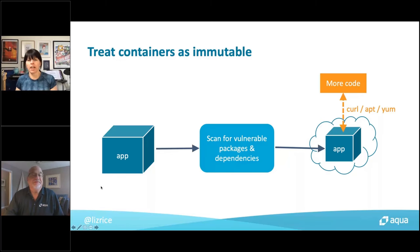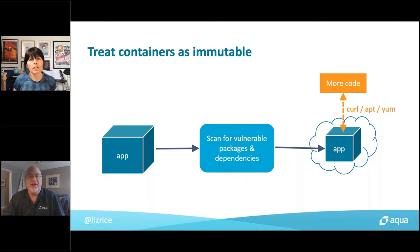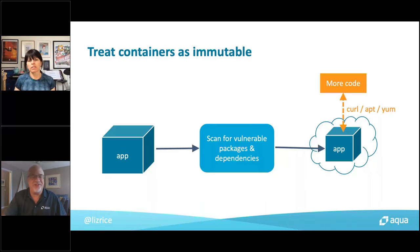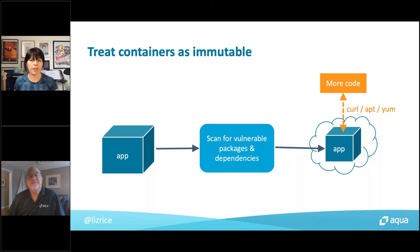If you add additional code to your image at runtime — using package managers like apt or yum, or curl, FTP, or git clone — that additional code hasn't been scanned, and you have no way of knowing it's safe to run. Best practice is to only run code in your containers that was present when you built the image. We call this treating containers as immutable. A change to a running container is sometimes called drift, and we'll come back to that idea later. For 99.9% of normal applications, there's no reason to update a running container — it's much better to rebuild your container image and redeploy with the updated code.